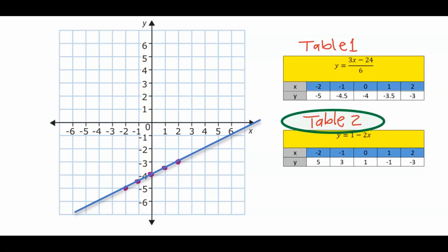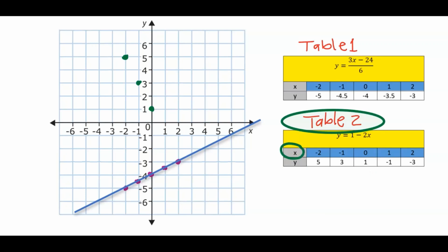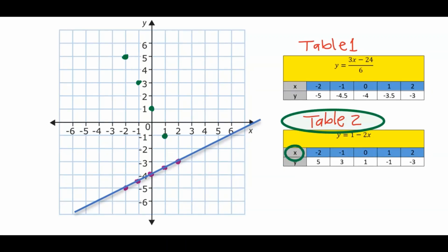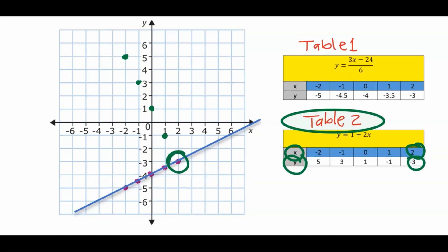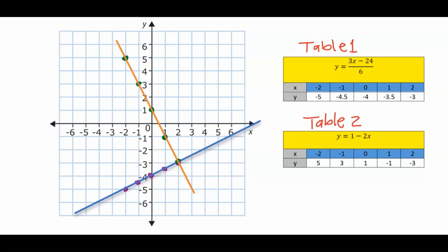Next, on the same graph, plot table two from equation two. When x equals minus two, y equals 5. When x equals minus one, y equals 3. When x equals zero, y equals 1. When x equals one, y equals minus 1. When x equals two, y equals minus 3 — here we have a superimposition point, a coincident point. With a long ruler, join all the points to draw the straight line graph for equation two.